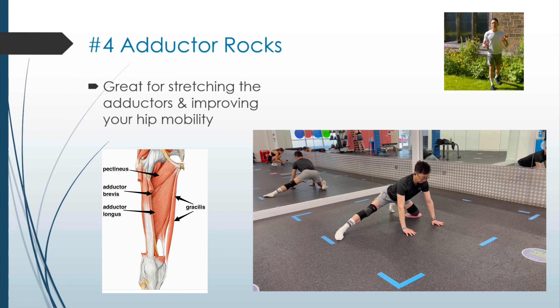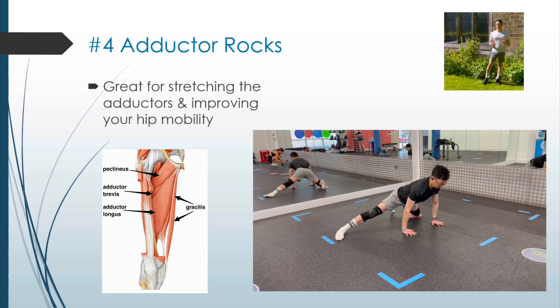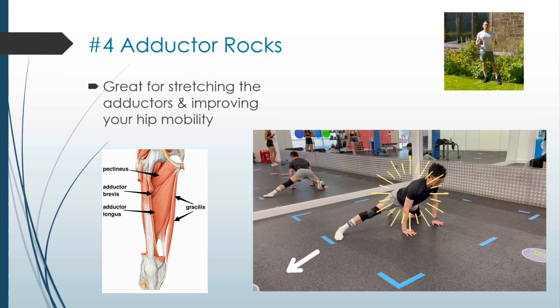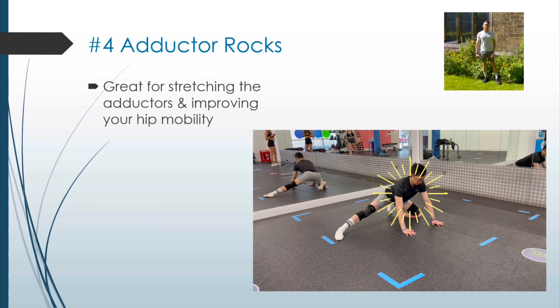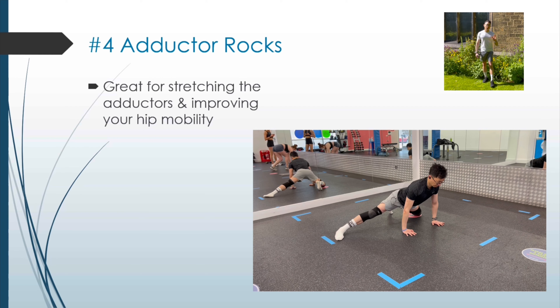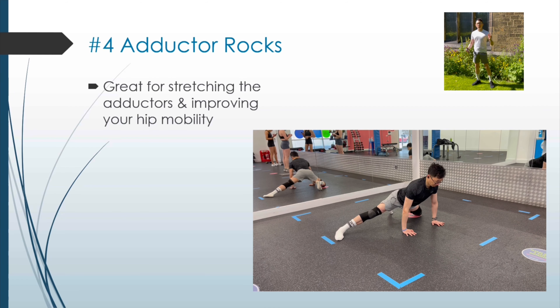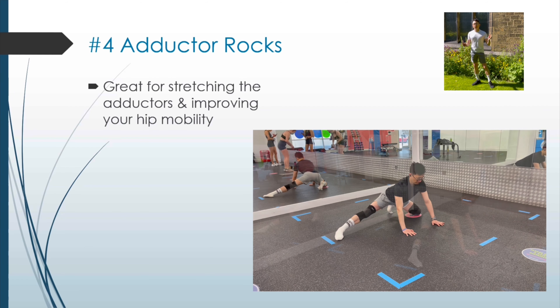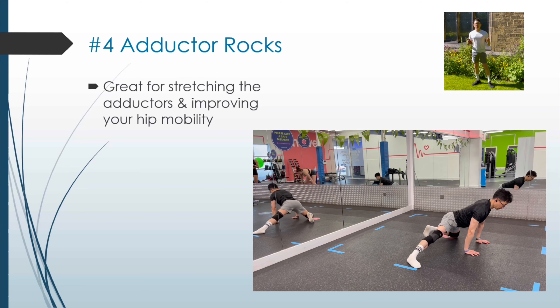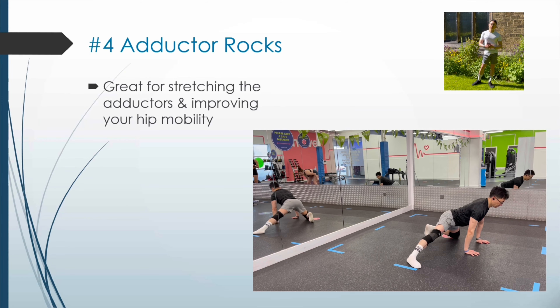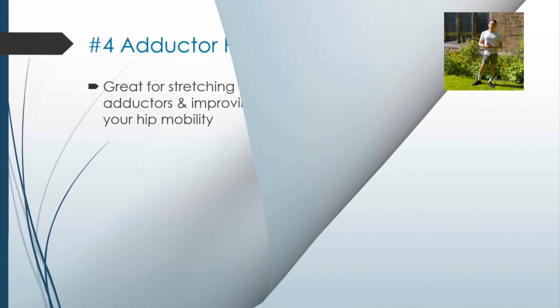The adductor rock is great for stretching your adductors as well as improving your hip mobility. Start in the tabletop position with the knees under hips and wrists under shoulders. Extend one leg out to the side. Maintain core activation to keep a neutral spine as you sit back towards your heel. This is meant to be a slow and controlled movement, so take a pause as you sit back to get a nice stretch in the adductors before returning to start.